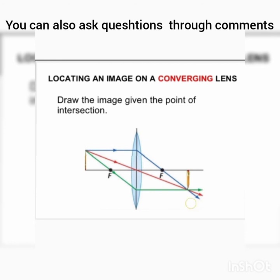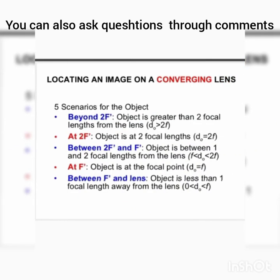Where these rays join is the point of image formation. The point where the green ray and the other rays intersect — that point is where the image forms. From the ray diagram of a convex lens, the image is real and inverted.